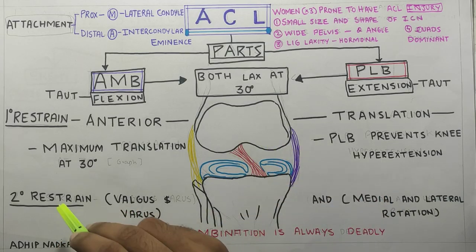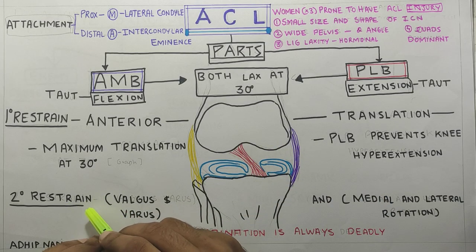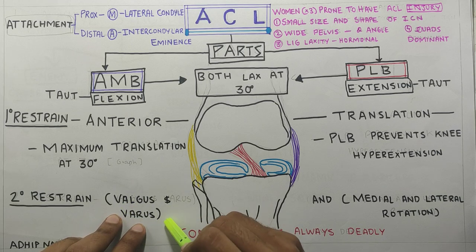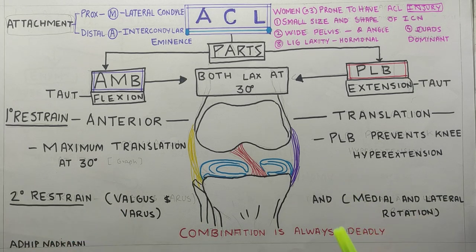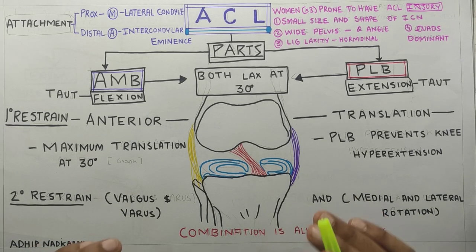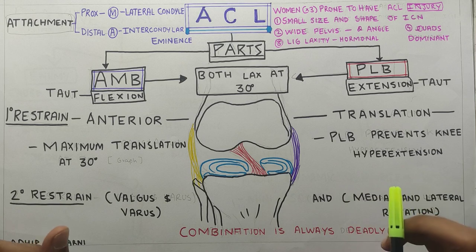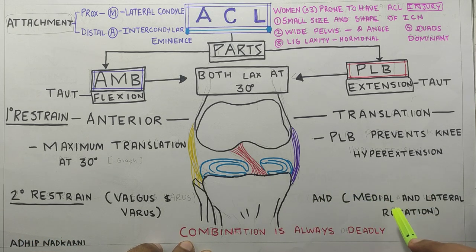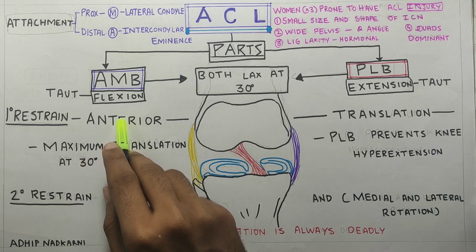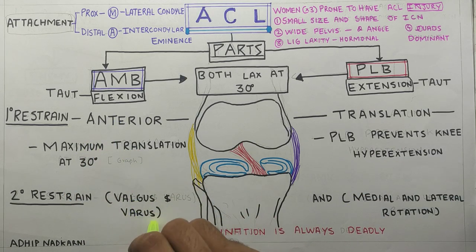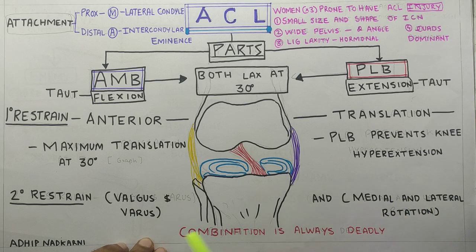Moving on to the secondary restraint — ACL prevents valgus and varus forces, and it also prevents medial and lateral rotation. So in short, if you would like to give an analogy for ACL, it would be the nice guy. Why? Because it goes to stabilize the knee joint in every direction — it prevents anterior translation, valgus and varus forces, as well as medial and lateral rotation. I would like to demonstrate this in the model.